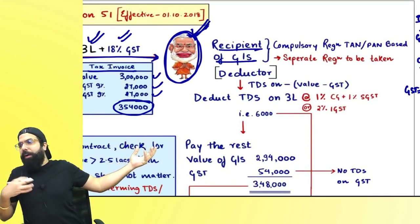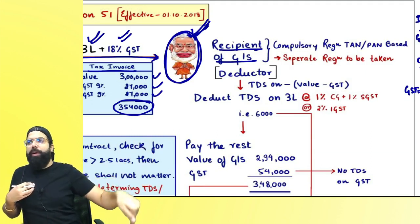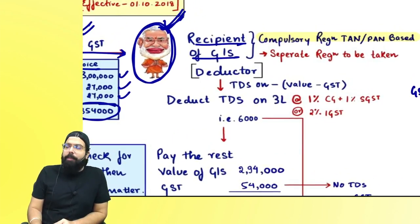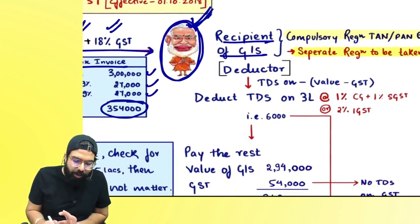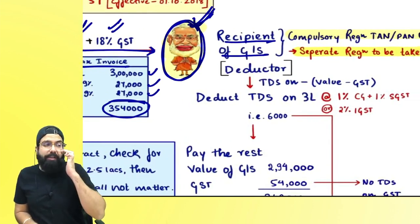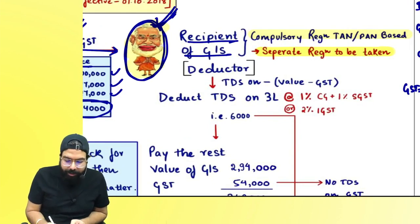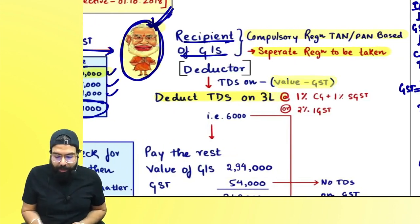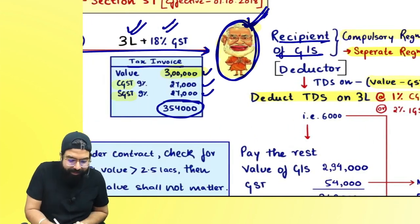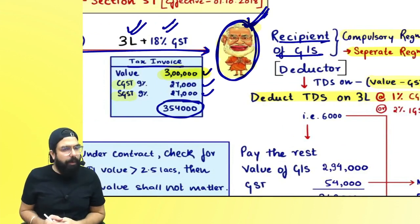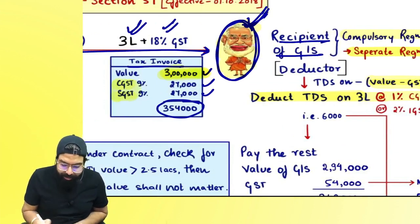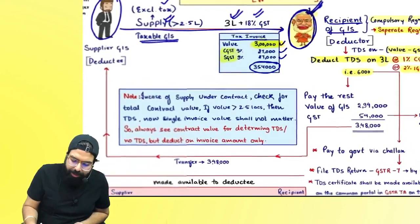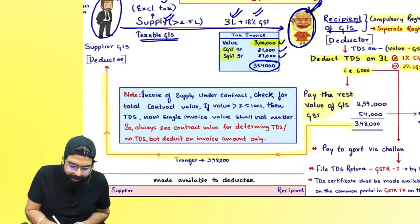The government wants to trace people supplying to government departments, so the government department deducts TDS and pays it to the government. The government department must take compulsory registration — either TAN-based or PAN-based — as a separate TDS deductor registration, even if they are normally registered. TDS is deducted only on the value: total invoice value minus GST. If CGST and SGST are charged, 1% CGST and 1% SGST are deducted. If IGST is charged on ₹3 lakh, 2% IGST = ₹6,000 is deducted.